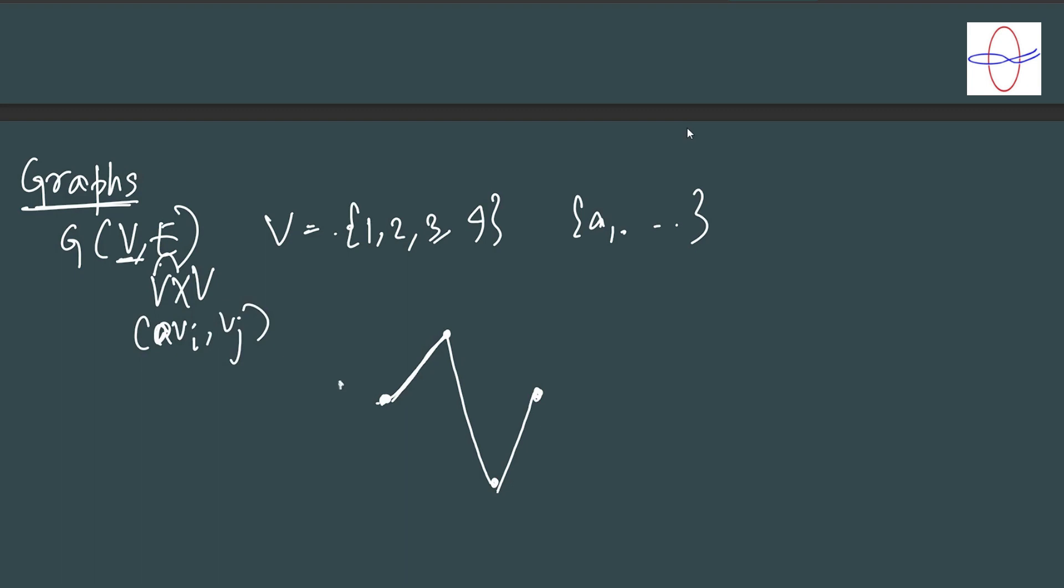So this in set notation will look like v1, v2, v3, v4. And the set of edges would be (v1,v2), (v2,v3), (v3,v4), and so on. We have a lot of freedom in what edges can be.